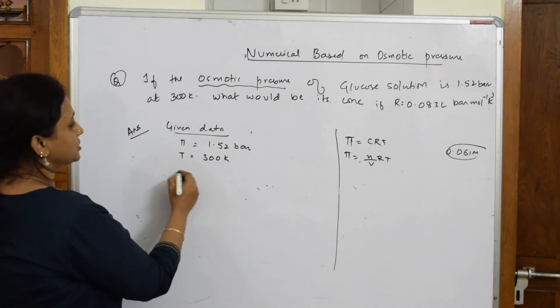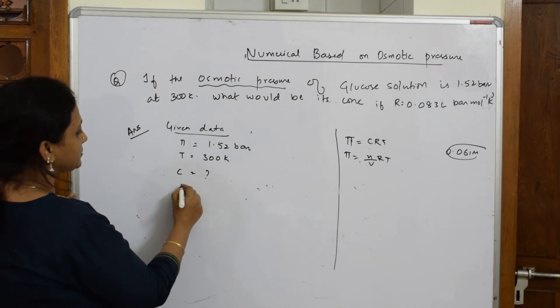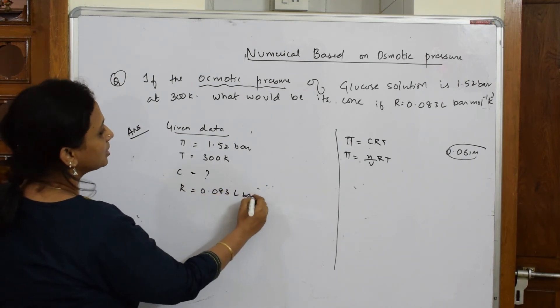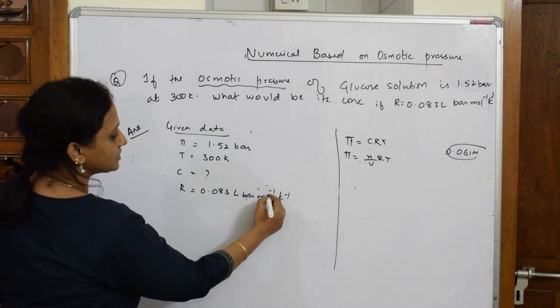What would be its concentration? I have to find C. R value is given to me: R equals 0.083 liter bar mole inverse Kelvin inverse. This is what is given to me.